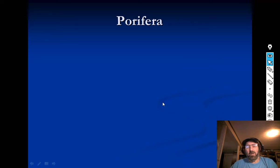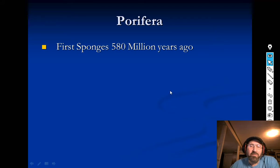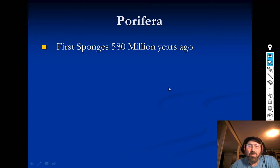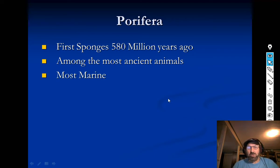Porifera are a pretty neat group of animals. They're fairly simple — about the simplest of the animals. They're about 580 million years old, a pretty old group, and were one of the first animals on the scene that we know of. Most of them are marine, so most live in the oceans or seas.